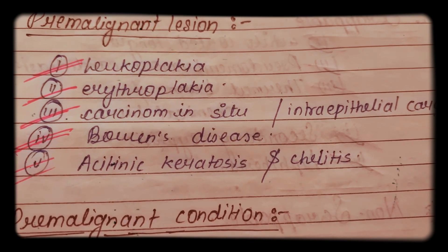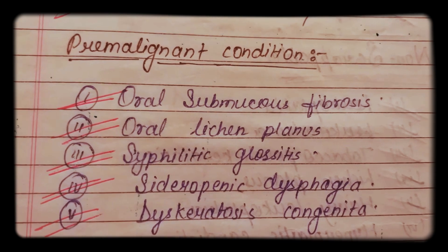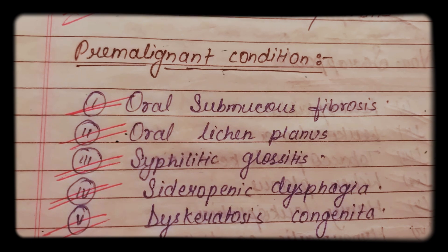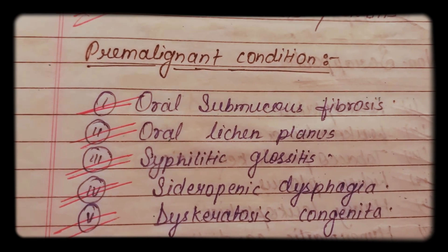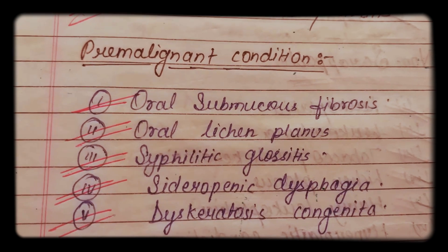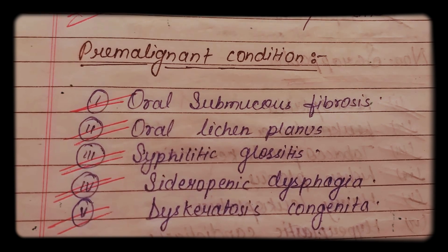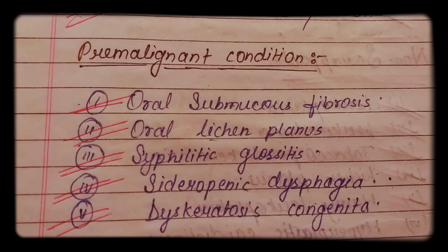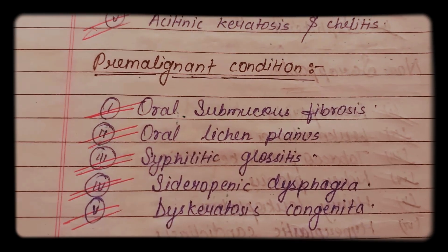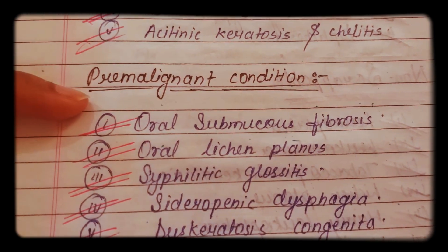A pre-malignant condition is a generalized state of the body which is associated with a significantly increased risk of cancer. It is divided into: oral submucous fibrosis, oral lichen planus, syphilitic glossitis, sideropenic dysphagia, and dyskeratosis congenita. These are very important topics, with oral submucous fibrosis and oral lichen planus being the most important for exam purposes.